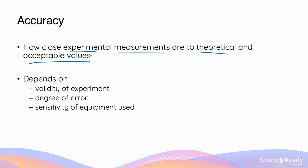Once you know this definition, it's easy to understand that unless you know the theoretical and accepted values, you won't be able to assess the accuracy of the results. Sometimes we simply don't have a standard or a set of theoretical accepted results, and in these kinds of experiments it's impossible to comment on accuracy.